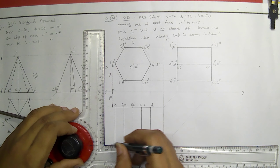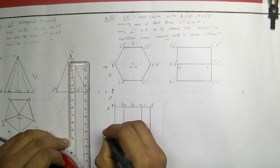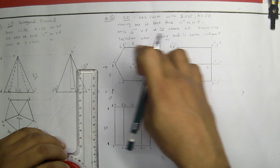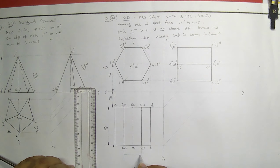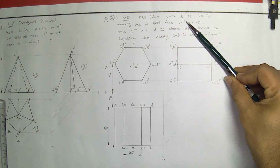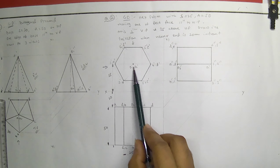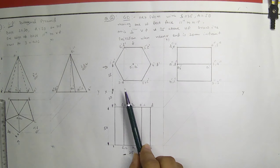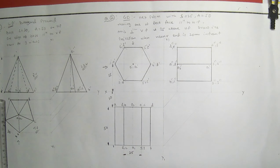We have to mention the dimensions of the prism — this is the axis 50, and the side is 25. With this we are finished with the problem: hexagonal prism side 25, axis 50, having one of the rectangular faces parallel to HP and axis perpendicular to VP, with the axis 35 mm above the HP, and the nearer end — the ABCD face — 20 mm from VP. Thank you for watching.